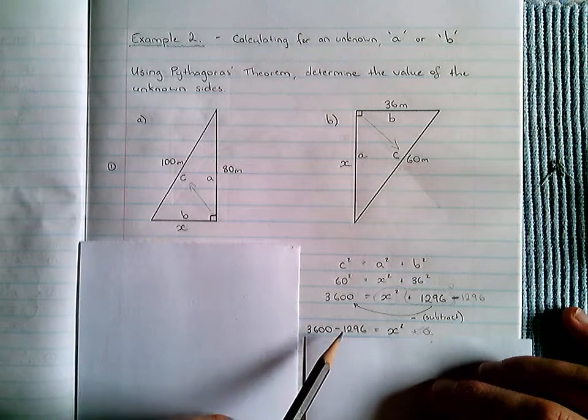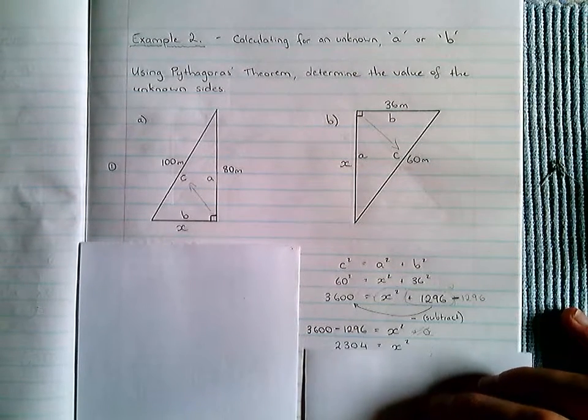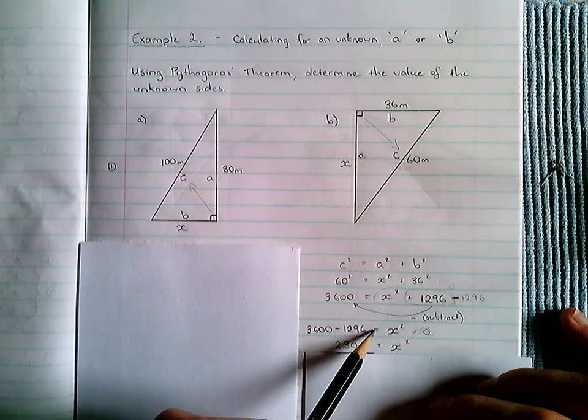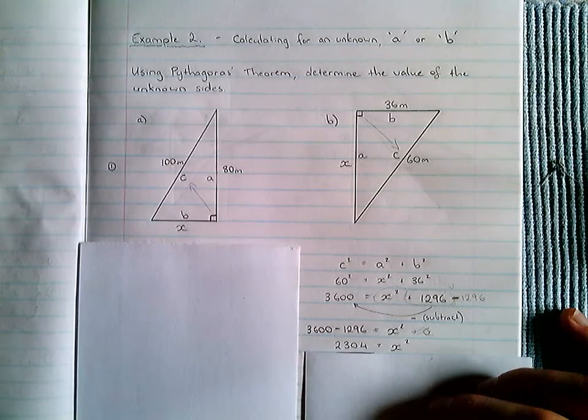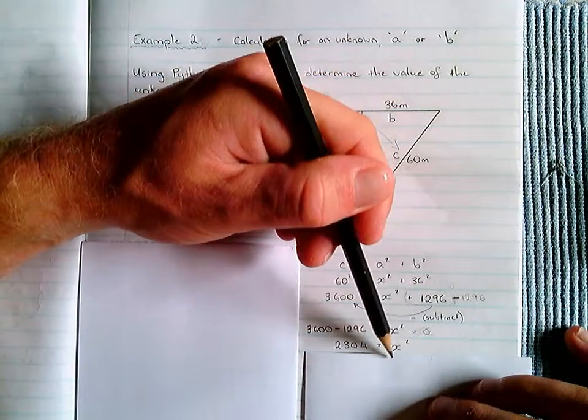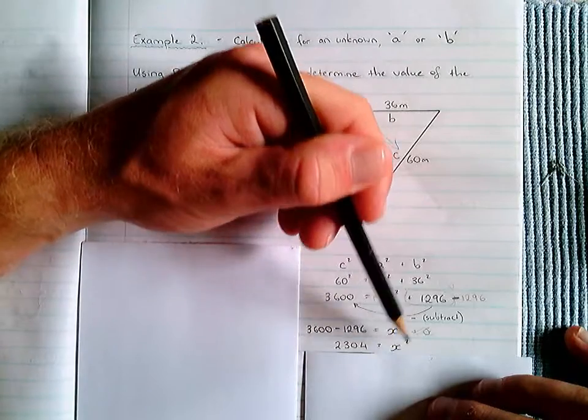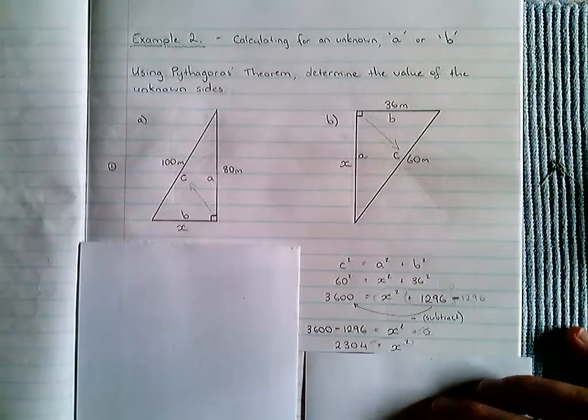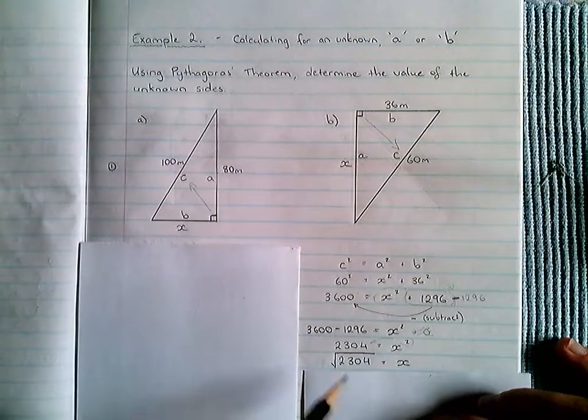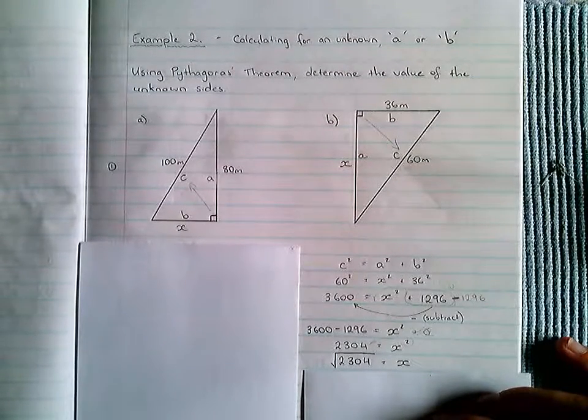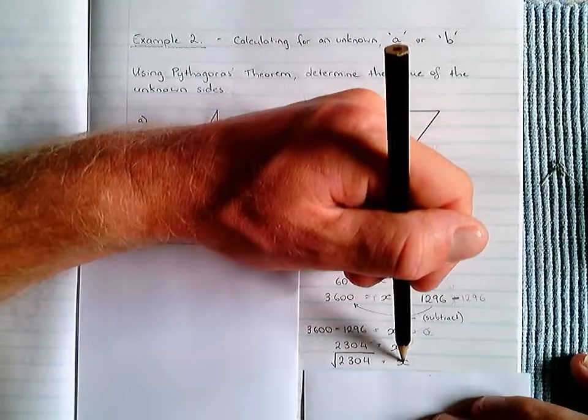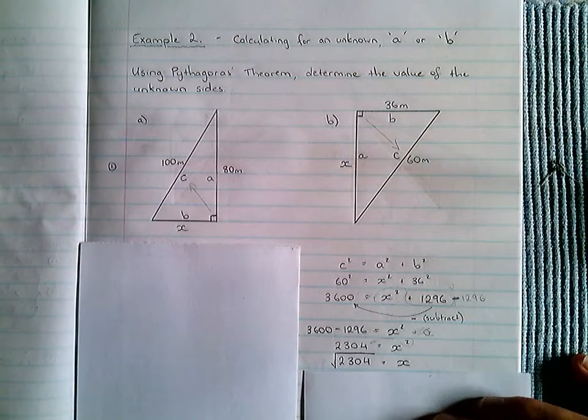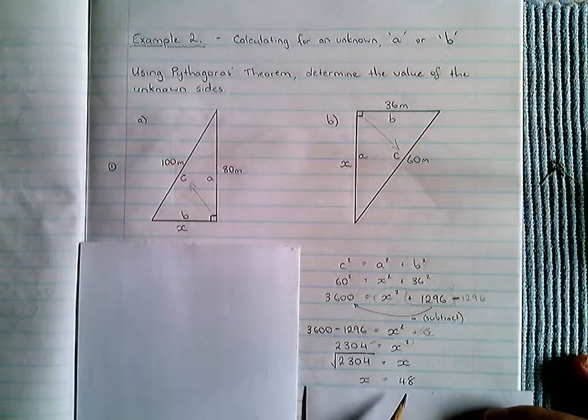If I take 1,296 from 3,600, I'll be left with 2,304, equal to my X squared value, and what I simply then need to do is change this X squared into an X, and to do that, I need to take the square root of that side, which is what I've written on this line. The square root of 2,304 will then be equal to just X, which is our unknown value. The square root of 2,304 in a calculator is equal to 48.